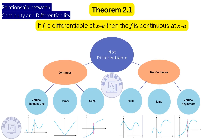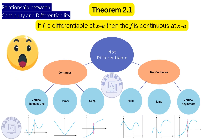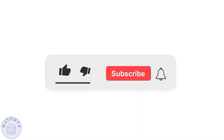The theorem states: if f is differentiable at x equals a, then f is continuous at that point. The diagram shows cases where a function is not differentiable: if it's not continuous it's not differentiable; and if it is continuous, there are three special cases — a vertical tangent line, a sharp corner (as in absolute value at the intersection point where derivatives from left and right have different signs), and a cusp (such as the cube root of x). You should memorize these three cases.